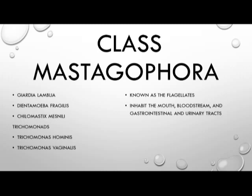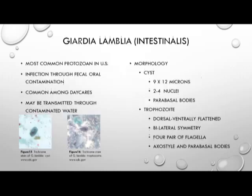This class is known as the flagellates and they inhabit areas of the body such as the mouth, bloodstream, gastrointestinal, and urinary tracts. The first organism is Giardia lamblia, formerly known as Giardia intestinalis, and it is the most common protozoan in the United States. Infection of this organism occurs through fecal-oral contamination, through contaminated food or water sources.